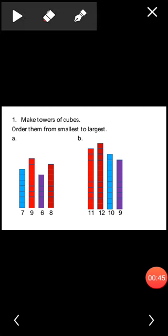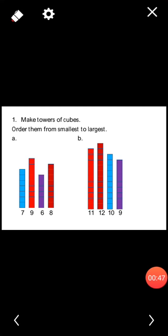Look at these towers of cubes. Order them from smallest to largest: 7, 9, 6, 8. These numbers are not in order. First you can write 6. Yes, what comes after 6? 7, 8, 9. Correct.